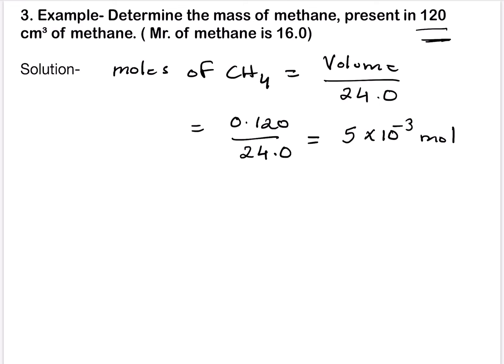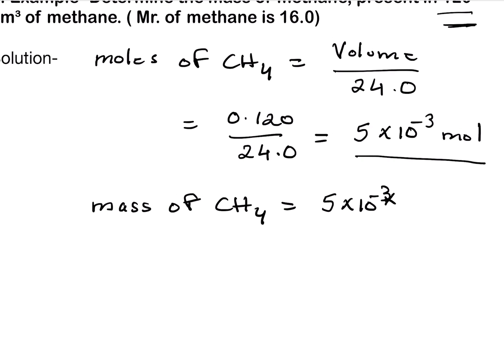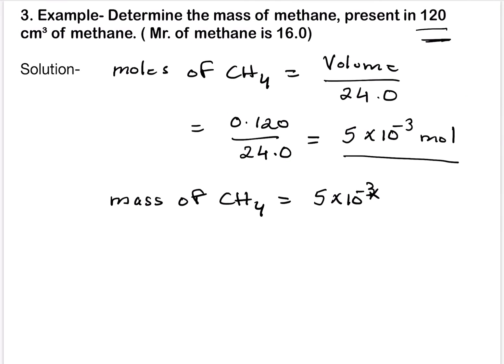Then we have to convert this mol into mass. So mass of methane equals to 5 into 10 to the power minus 3 into 16.0. What is this 16.0? This is the molar mass of methane. Carbon is 12, 4 hydrogen. So 16.